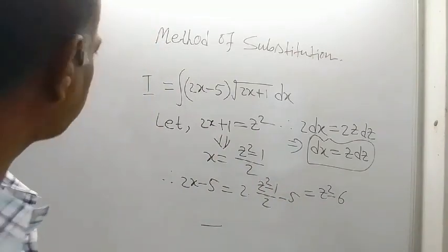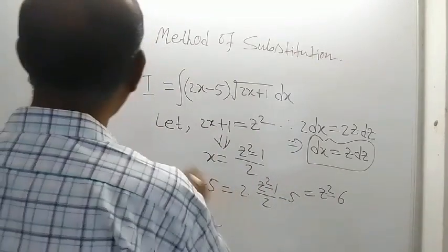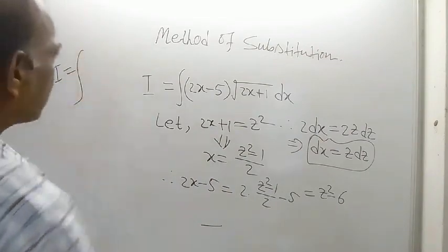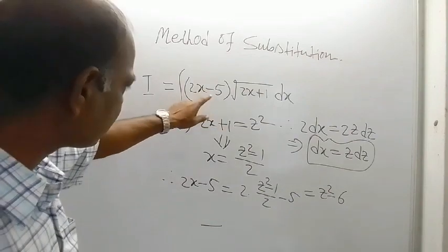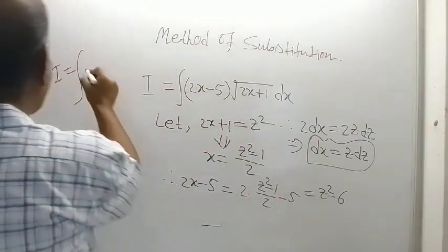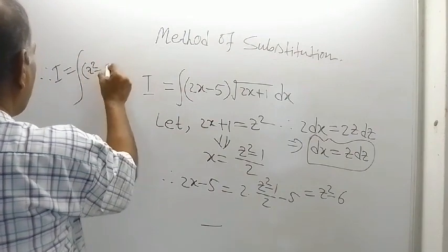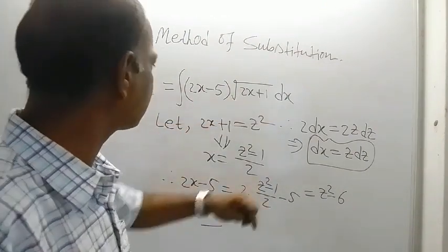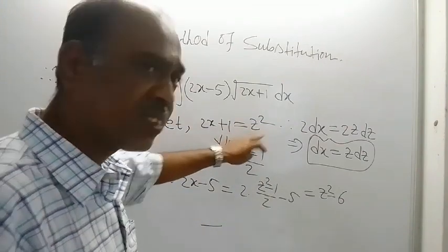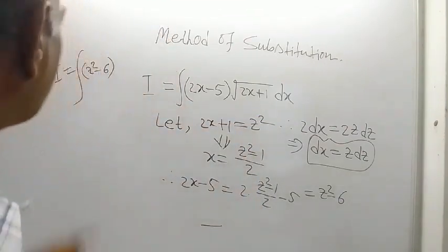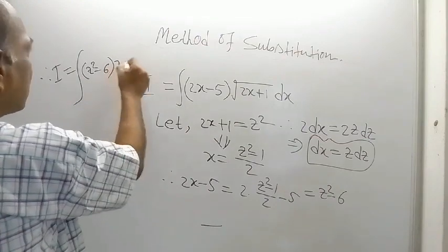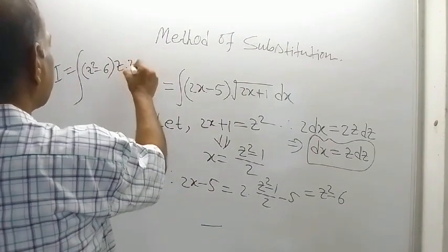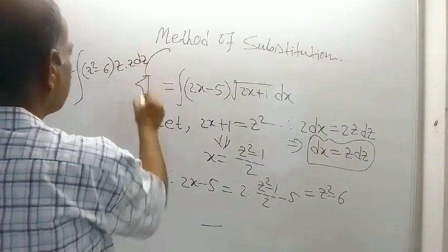Now the solution becomes easy. This I equals integration of (z²-6) times root of (2x+1), which equals z, times dx which is z dz. So this is z dz.